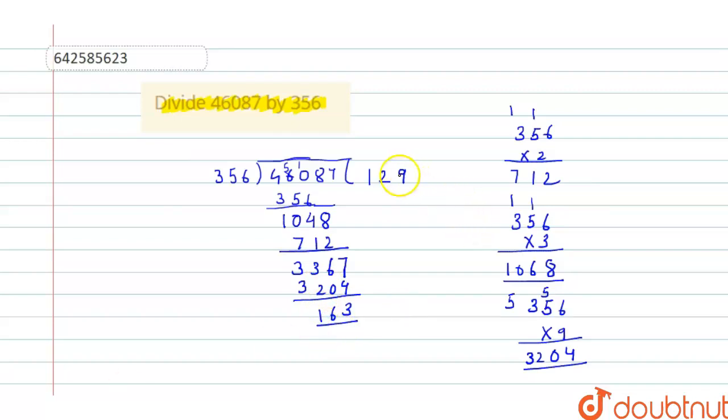The quotient is 129 and remainder is 163. I hope it's clear, thank you.